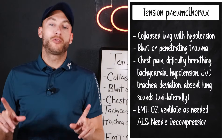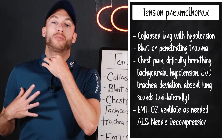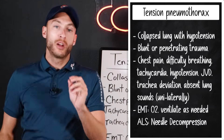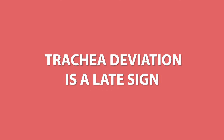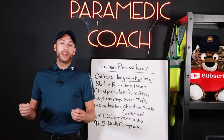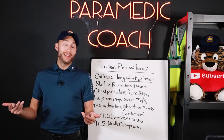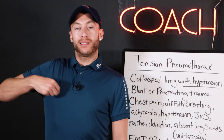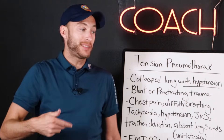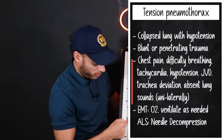We also have tracheal deviation. If a bullet enters on one side and pressure moves over, the trachea deviates in the direction the pressure is pushing. Tracheal deviation is a late, late sign. With lung sounds, I'm going to hear absent or diminished lung sounds — depending on severity — on the affected side. Absent lung sounds being much worse. These signs and symptoms will be important for your test question.